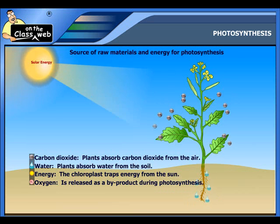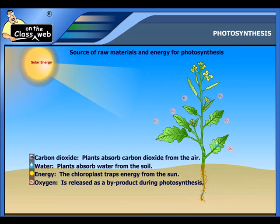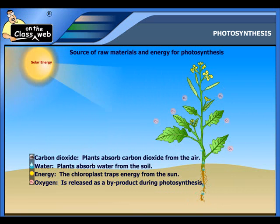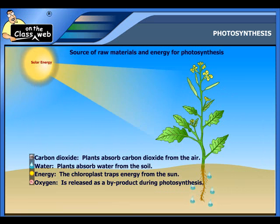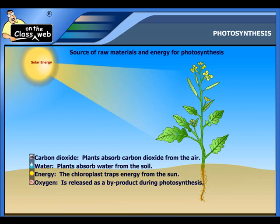The process of photosynthesis taking place in plants is shown here. Sunlight is the source of energy for photosynthesis. In the presence of sunlight, the plant absorbs carbon dioxide from the air and water from the soil. During this process, chlorophyll in the leaves traps the solar energy and releases oxygen as a byproduct. This process is repeated to produce energy in the plant cells.